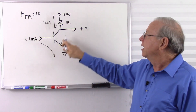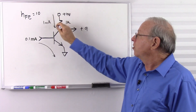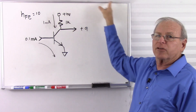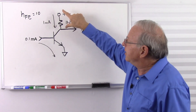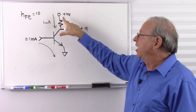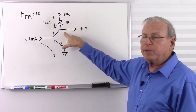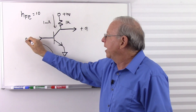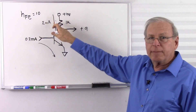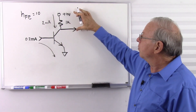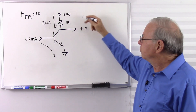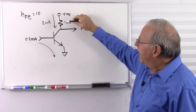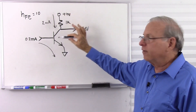As I increase my base current, my collector voltage goes down. My collector current increases, but the more current flowing into the collector, the greater the voltage across this resistor. This top voltage can't change because it's tied to the power supply through a very low impedance, so the collector voltage must be lower. Let's increase to 0.2 milliamps — that gives me 2 milliamps through the resistor, doubling the voltage to 2 volts. Starting with 10 volts, losing 2 volts, I'm now down to 8 volts.